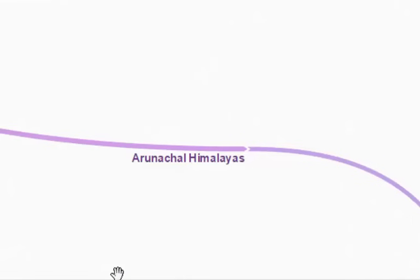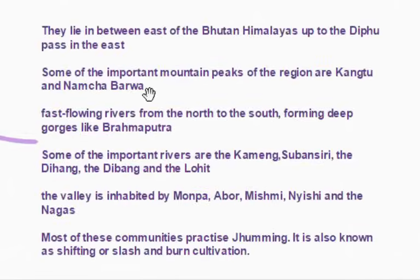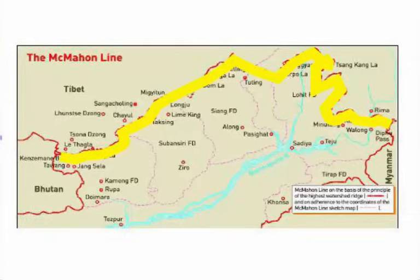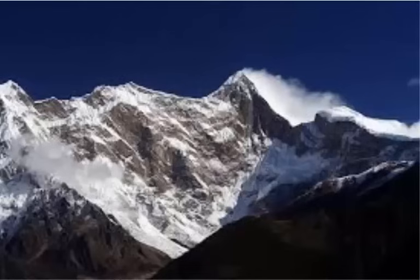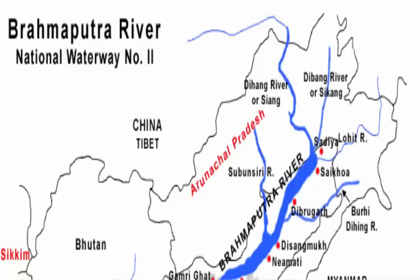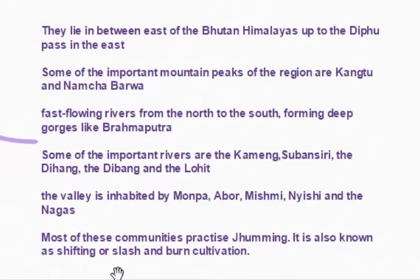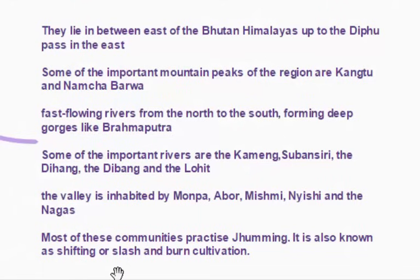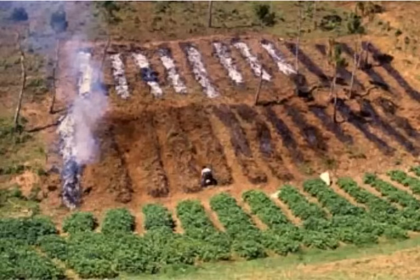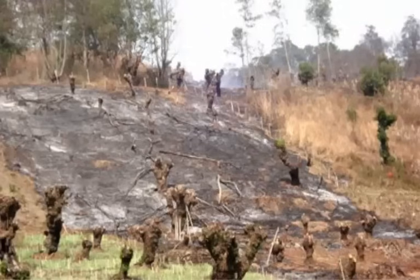The Arunachal Himalayas lie east of Bhutan Himalayas up to Diphu Pass in the east. Important mountain peaks of the region are Kangto and Namcha Barwa. Rivers like the Brahmaputra, which are fast-flowing from north to south, form deep gorges. Some important rivers are the Kameng, Subansiri, the Dihang, the Dibang, and the Lohit. The valley is inhabited by Monpa, Abor, Mishmi, Nishi, and the Nagas. Most of these communities practice Jhuming, also known as shifting or slash-and-burn cultivation.